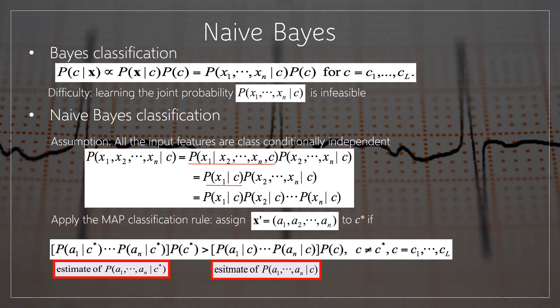In Naïve Bayes classification, P is directly proportional to P, which is equal to P for C equal to C1, C2, C3, so on up to Cl.